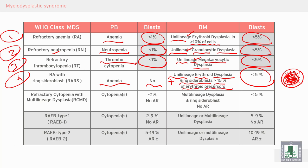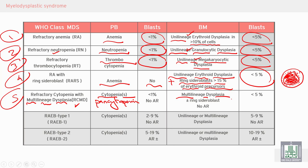Condition five is refractory cytopenia with multilineage dysplasia. There is pancytopenia — decrease of all cells in the peripheral blood — due to multilineage dysplasia, with or without sideroblasts. Blasts in the peripheral blood less than 1%, no Auer rods, and in the bone marrow more than 5% but less than 5%.